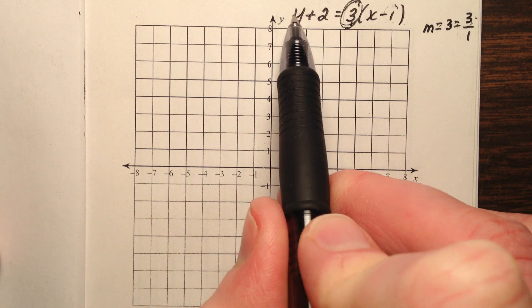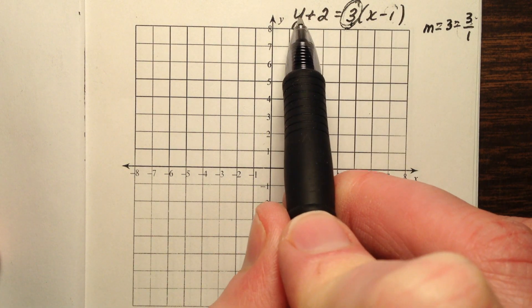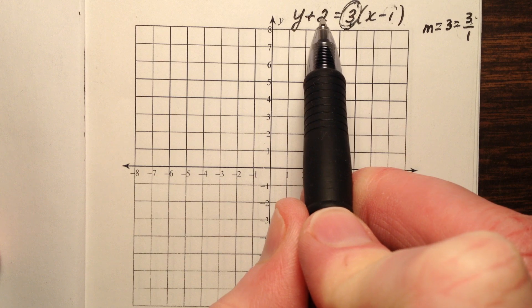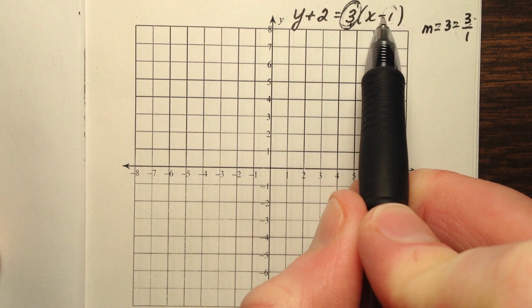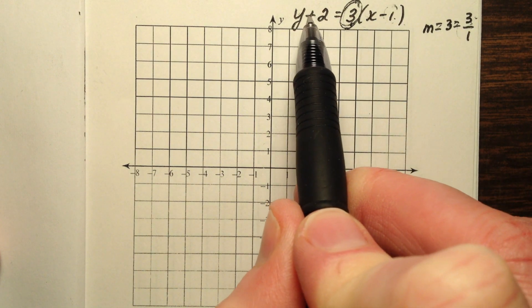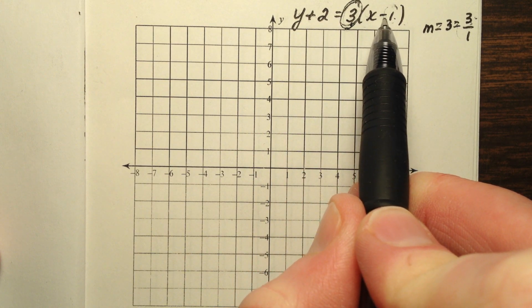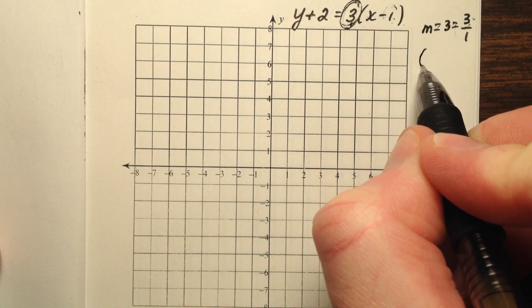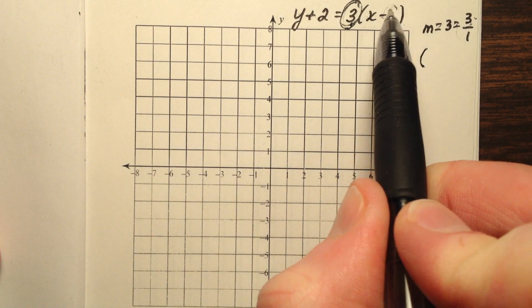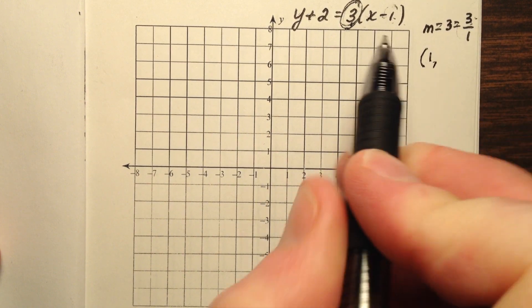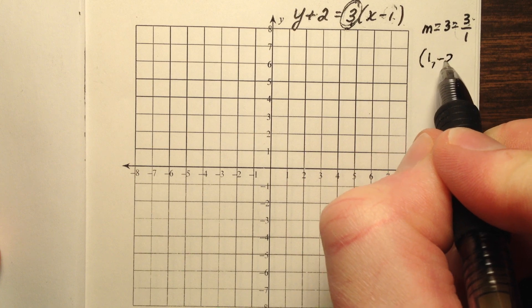Because recall that in point-slope form, the general equation is y minus y1, and then for our x's is x minus x1. So the formula has subtraction signs here, which means we need to change the sign when we grab the value out of there. So x minus 1, so our x is 1, and then our y is going to be negative 2.